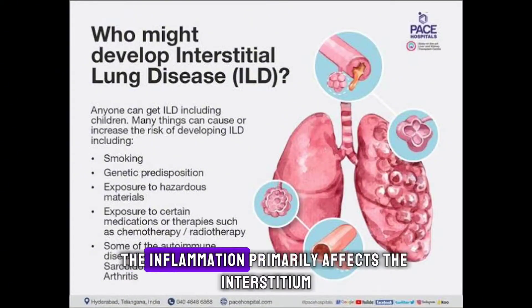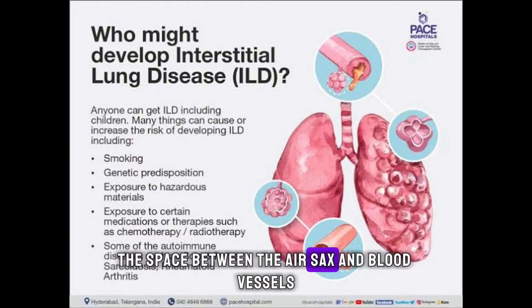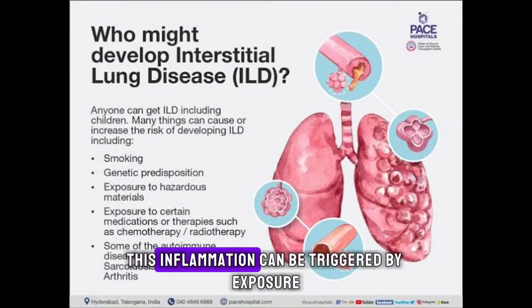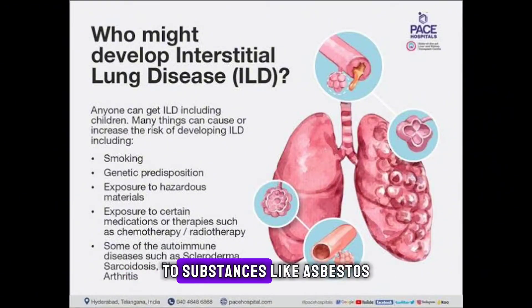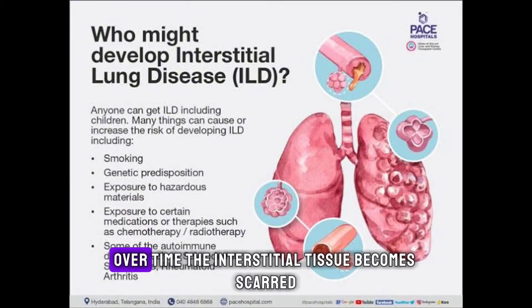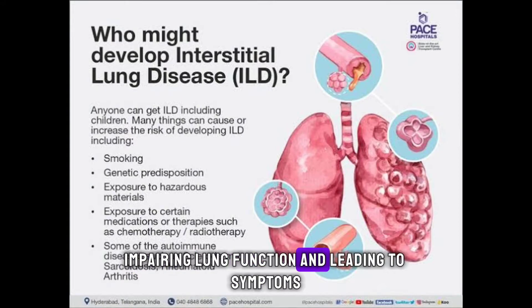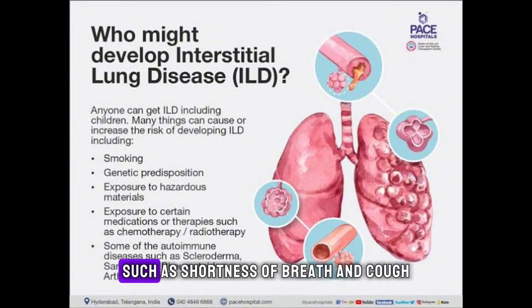In pneumonitis, the inflammation primarily affects the interstitium — the space between the air sacs and blood vessels. This inflammation can be triggered by exposure to substances like asbestos, silica dust, or certain medications. Over time, the interstitial tissue becomes scarred, impairing lung function and leading to symptoms such as shortness of breath and cough.